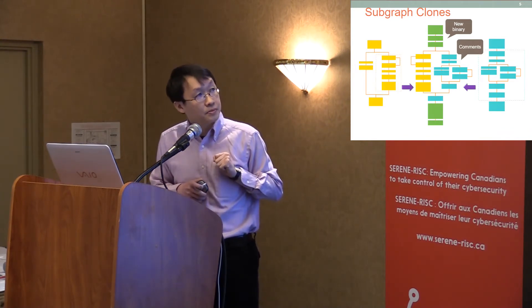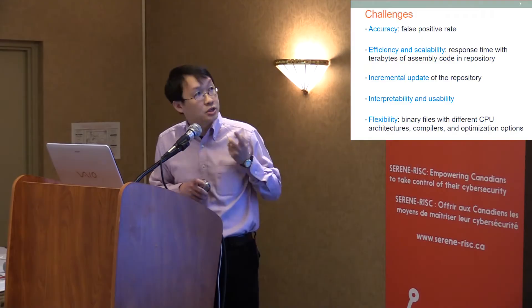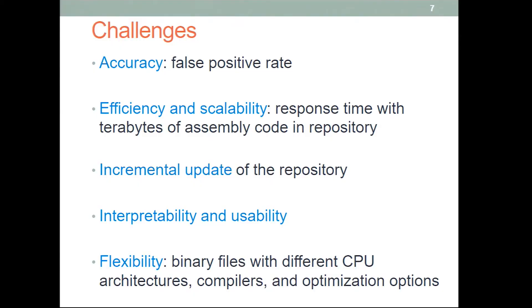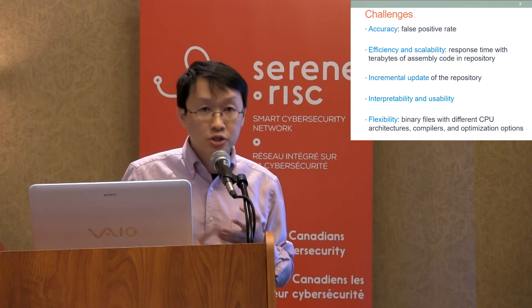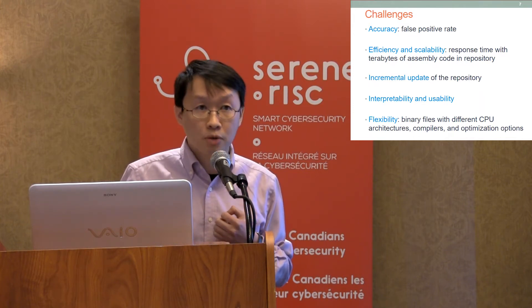These are the challenges we have to address: we want to make sure it is accurate — when we say this is a clone, we want to eliminate false positives. We want to handle this in an efficient and scalable manner because of the size of the assembly code, and we would like to incrementally update the repository, visualize the clone results, and have the flexibility to handle binaries with different CPU architectures, compilers, and optimization options.